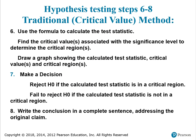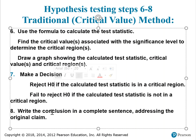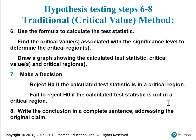If you're using the traditional or critical value method, steps 1 through 5 are the same as before. Step 6, however, you're going to start by calculating the test statistic. Then you're going to find the critical value or values associated with the significance level to determine the critical region or regions. You draw a graph with the test statistic, critical value, and critical region or regions visible. Then you make a decision: you reject H-sub-0 if the calculated test statistic is in the critical region, and you fail to reject H-sub-0 if the calculated test statistic is not in the critical region. Then you write the conclusion in a complete sentence addressing the original claim.